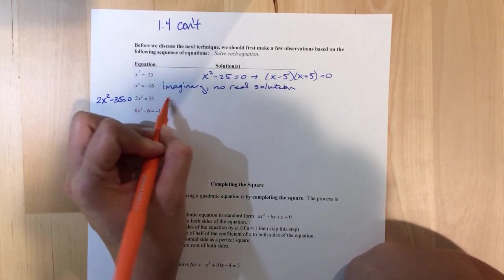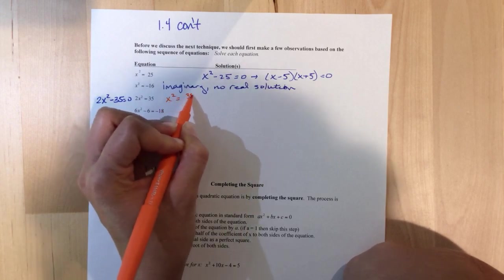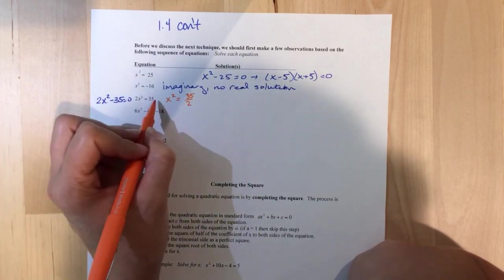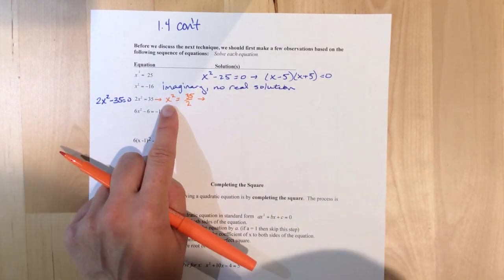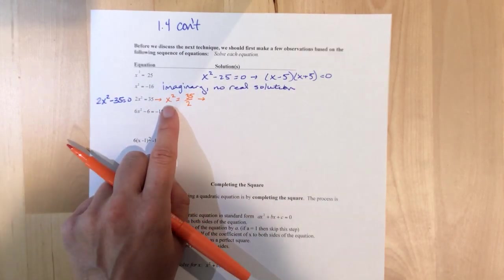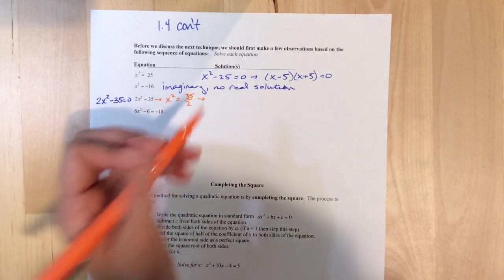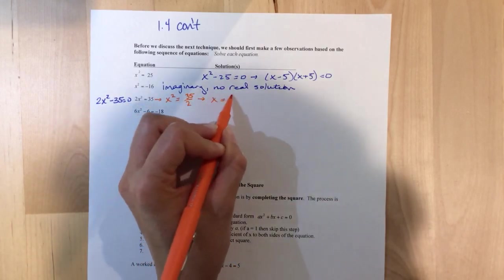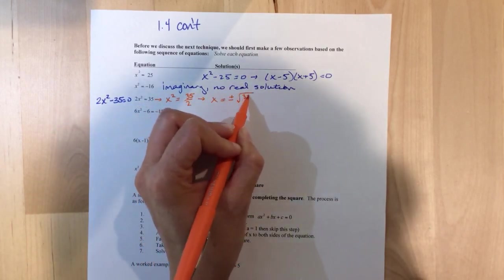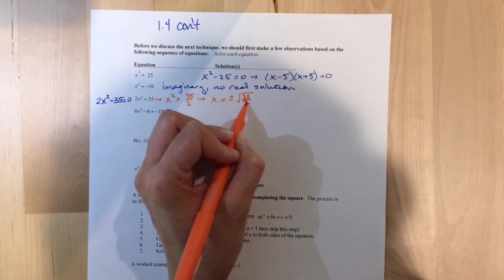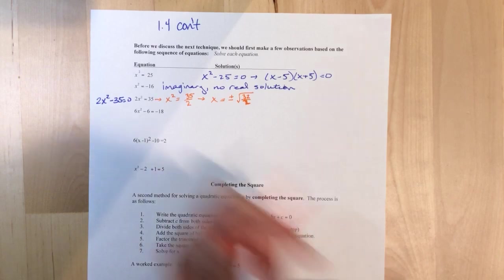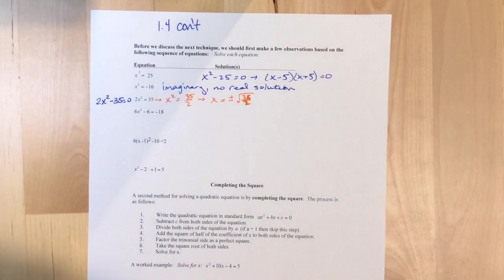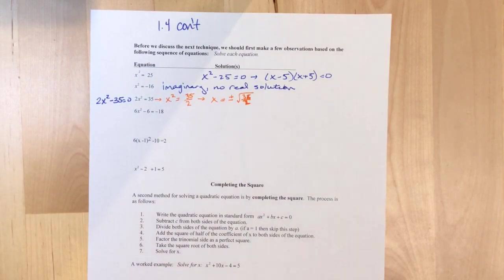So I'm going to divide by the 2. So x squared equals 35 over 2. And then the next step is to square root x squared. But what do we always have to remember when we take a square root? The plus or minus. Oops. So I've got plus or minus the square root of 35 over 2. So that would be the answer.